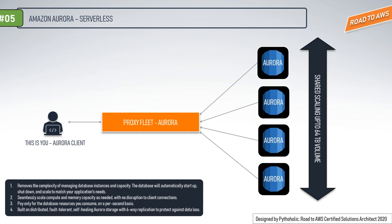Serverless gives cost benefits where you pay on a per-second basis for the database capacity you use when the database is active — no capacity planning needed. When visualized, we have our client wanting to access the Aurora database. Like previous explanations, we have our shared scaling for volumes, and the client connects to a proxy fleet, which then redirects the request to Amazon Aurora.